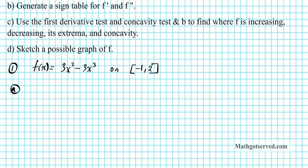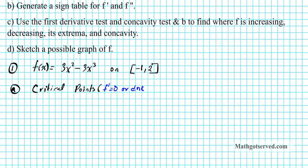For part A, we have to find the critical points. The critical points are the points where the derivative f' is equal to zero or does not exist. Remember your derivative fails to exist when you have a vertical tangent, a discontinuity, a cusp, or a corner. To find the critical points, we're going to find the first derivative. So f(x) = 3x² - 3x³. The first derivative f'(x), using the power rule, is 6x - 9x².